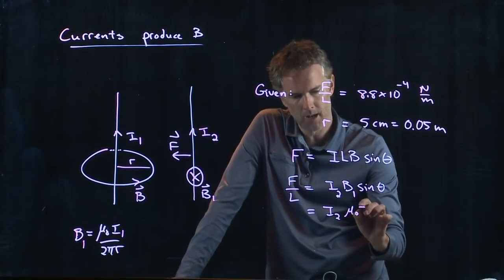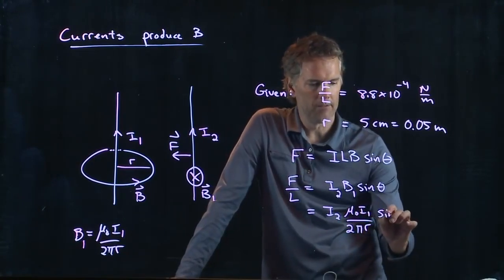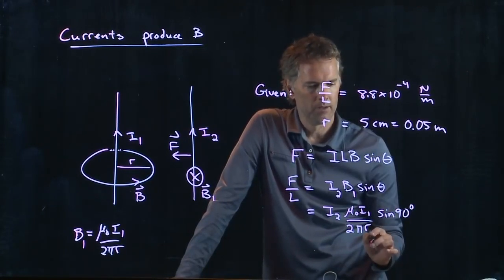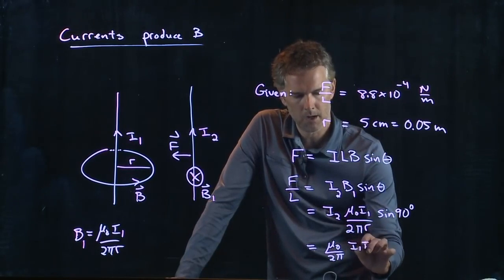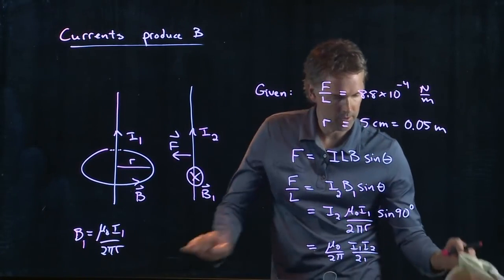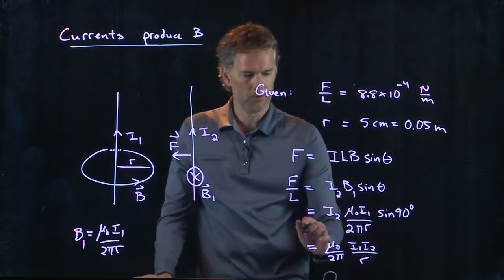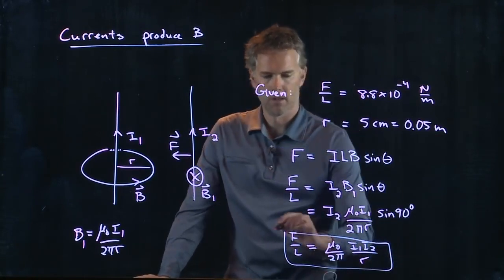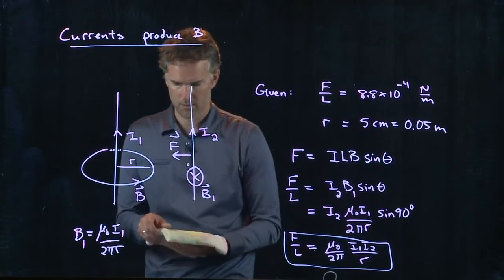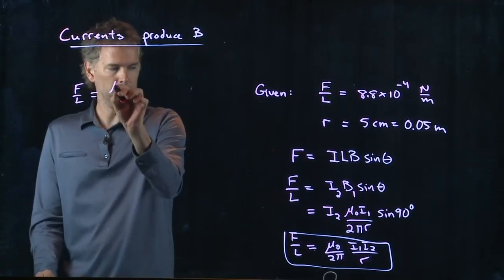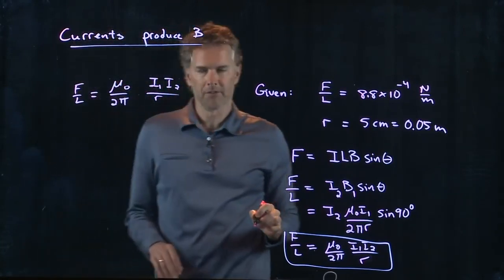And so now we can plug in for B1. B1 was mu naught I1 divided by 2 pi r. We have sine of 90 degrees, but that's just one. And so we get F over L equals mu naught over 2 pi times I1 I2 all over r. And now we can solve this equation for I2.